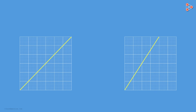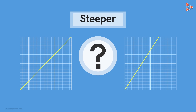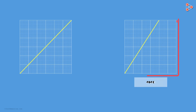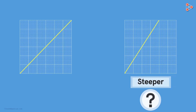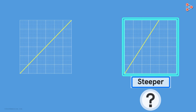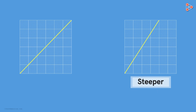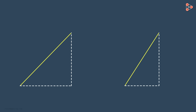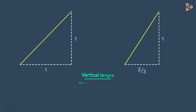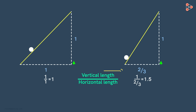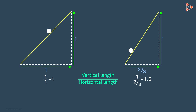Consider these two straight lines. Which one is steeper? The difference is subtle, but we can see that it is the second one. One simple way to concretely prove this is to draw horizontal and vertical lines, measure the lengths, and find the ratio of the vertical length to the horizontal length. On substituting the values, we get 1 and 1.5. The second ratio is clearly greater. If we walk along these lines, this ratio tells us how much vertical distance we cover relative to the horizontal distance. So if the ratio is higher, it means that the slant line is steeper.